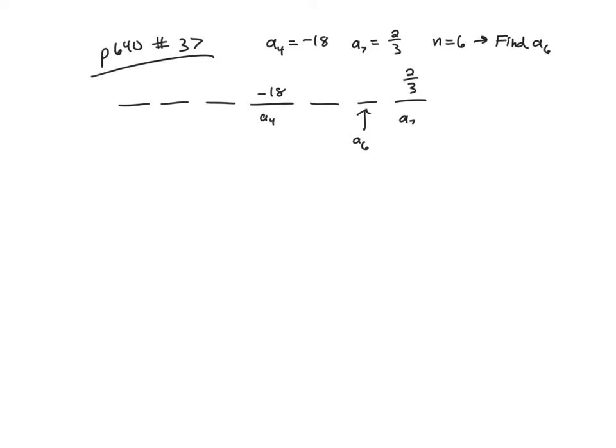So first of all, we need to find r. To do that, you've got to think how many r's. I multiply by r, then I multiply by r again, and then I multiply by r again. So to get from the 4th to the 7th, I've got 7 minus 4, that's 3 r's.